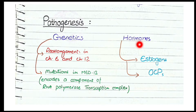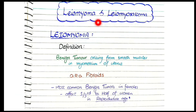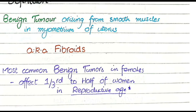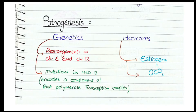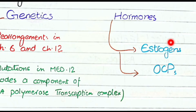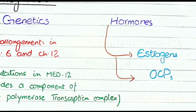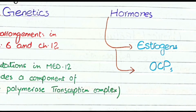The second component of pathogenesis is hormones. Estrogen is the hormone that favors the development of leiomyomas. Leiomyomas or fibroids occur in the reproductive age because they are estrogen responsive. In the reproductive age, the quantity of estrogen is maximum, so these leiomyomas usually develop during that period. After the reproductive age, the estrogen level falls and so does the risk of development of leiomyomas. In fact, most fibroids regress spontaneously after menopause when there is a lack of estrogen.